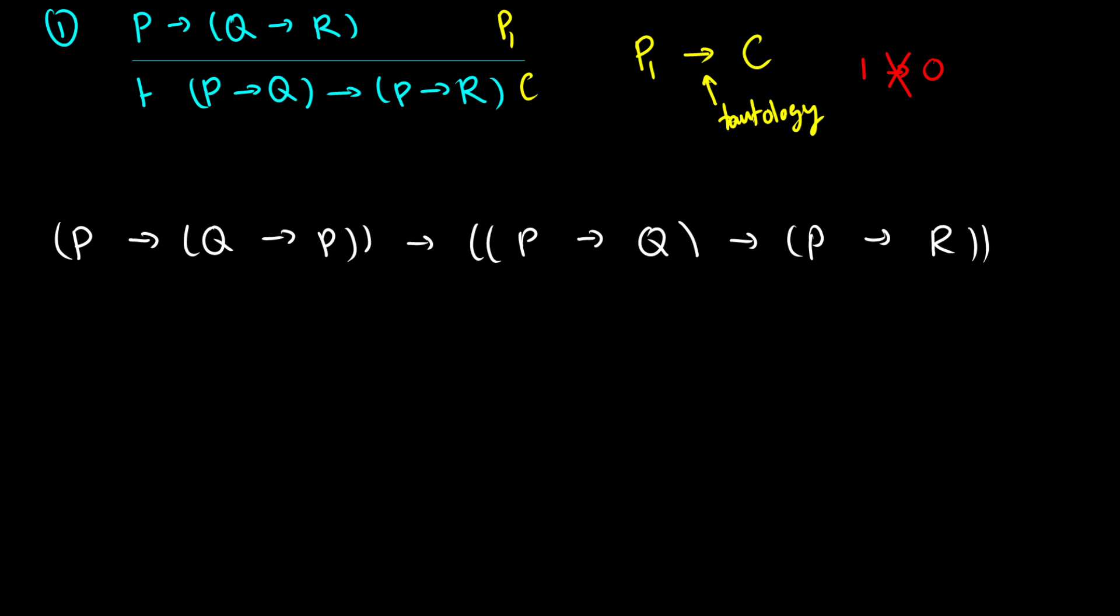So with the partial truth table, what we do is we just assume, okay, what if that happens? What if we have a 0? So that's what we're going to do here. This is like our what if. What if we have a 0 here? Well, in order for this to be a 0, that means that we have 1 arrow 0. So this means that P arrow Q arrow P has to be true, and that means that P arrow Q arrow P arrow R has to be false. If this hypothetical row exists.